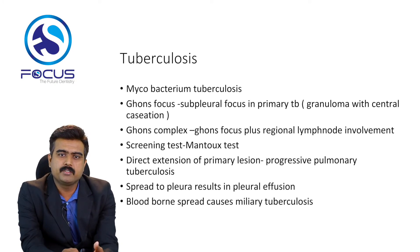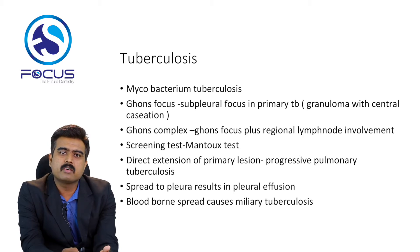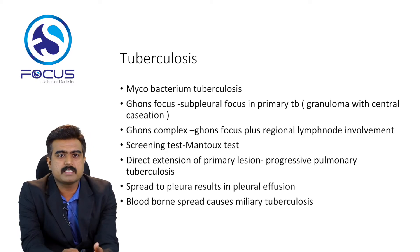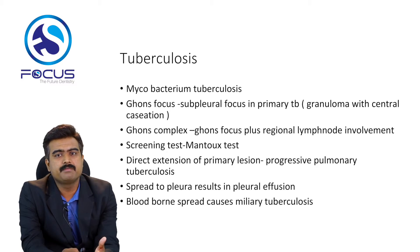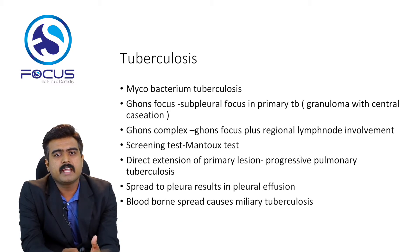The next one is tuberculosis, caused by Mycobacterium tuberculosis. You can see the Ghon focus and Ghon's complex in this disease. The Ghon focus is the subpleural focus in primary TB — a granuloma with central caseation. Ghon's complex is the Ghon focus plus involvement of a regional lymph node. The screening test used is the Mantoux test.